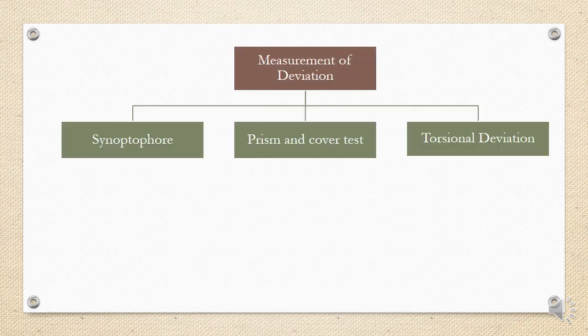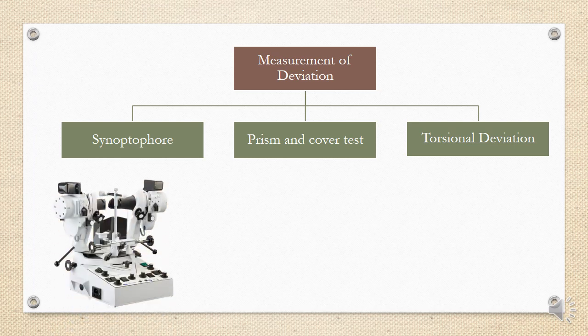Measurement of deviation is most important, especially if planning surgical treatment. It can be done using three methods: a synoptophore, a prism bar and cover test, or computerized torsional deviation measuring tools.